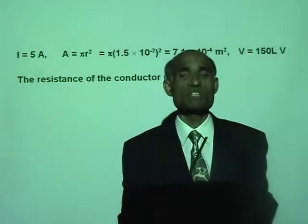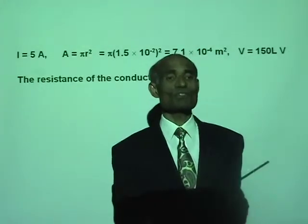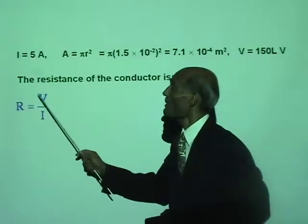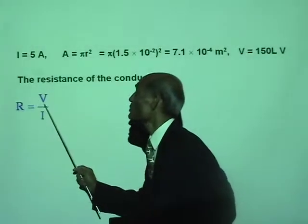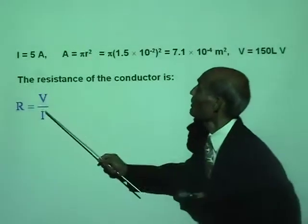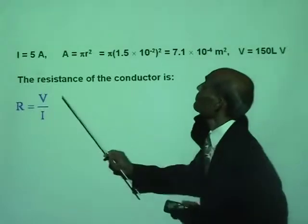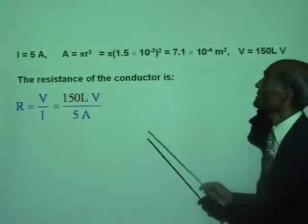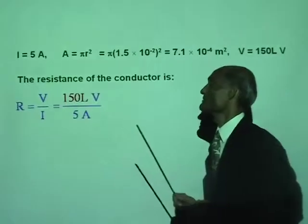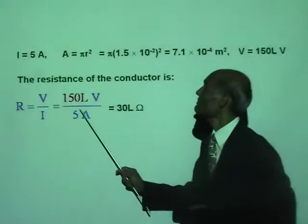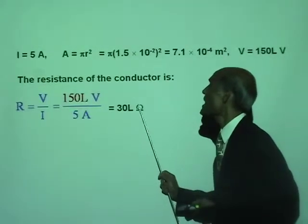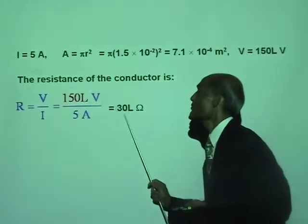The resistance of the conductor — the equation for resistance in terms of length and area of cross-section — we can write R equals V over I, where V is the potential difference and I is the current. We know the current. We know V equals 150 L. So R equals 150 L volts divided by 5 ampere. And that is 30 L ohm — that is the resistance of that conductor.